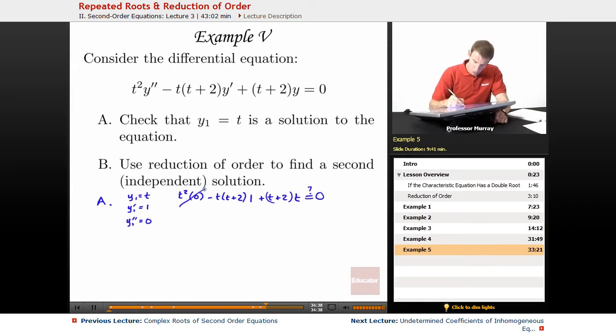The 0 term drops out, so we've got minus t times t plus 2 plus t plus 2 times t, checking if that equals 0. In each term, we've got t times t plus 2, one negative, one positive, so it simplifies to 0 equals 0.